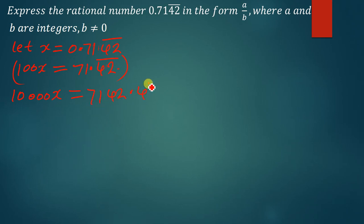Don't leave this point 42 because it's repeating. So now here's just the matter of subtracting. We subtract 10,000 minus 100. In other words we are trying to subtract this equation from that. So we're going to say 10,000x minus 100x.